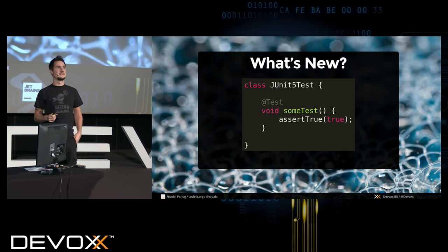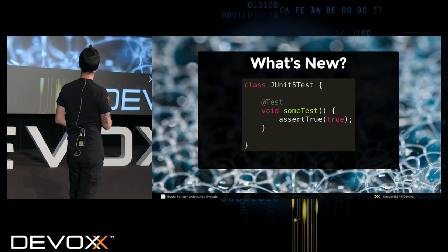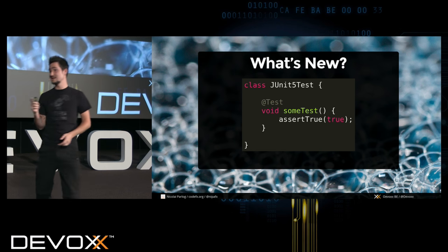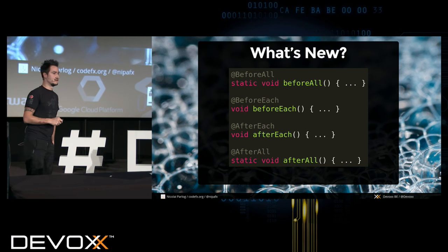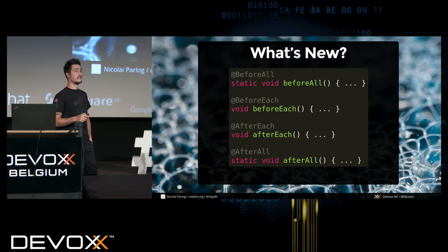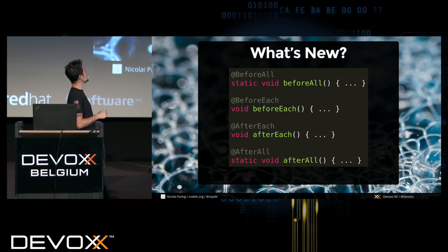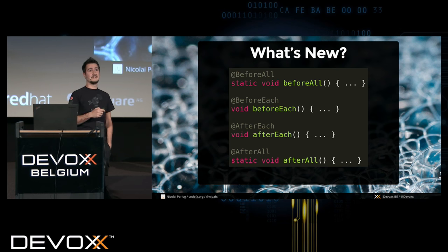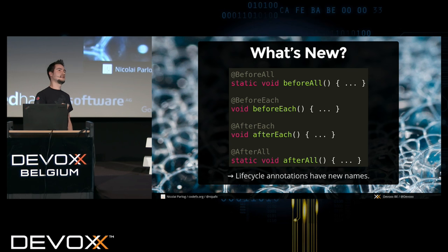What's new? No public — exactly, it's just package visible. These are the lifecycle methods — it's different names: before each. They used to be called 'before' and 'before class.' Now it's 'before each' and 'before all,' which I think is a nice change, because these names are less technical.